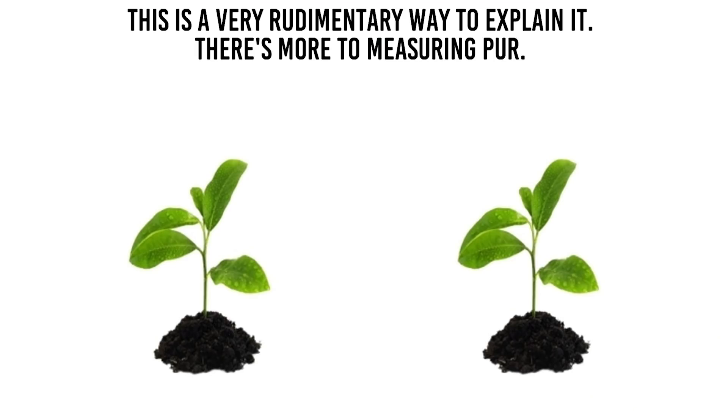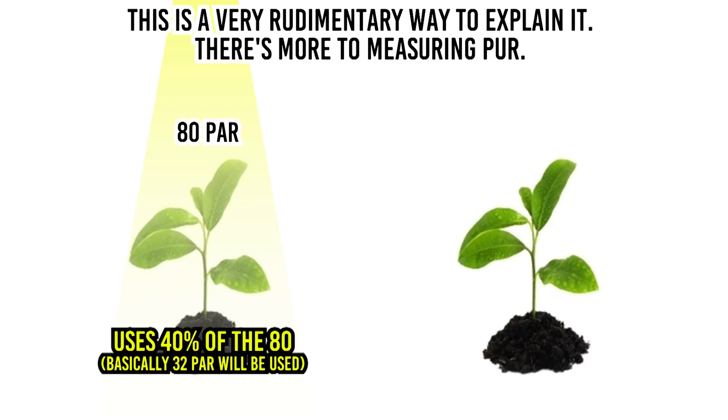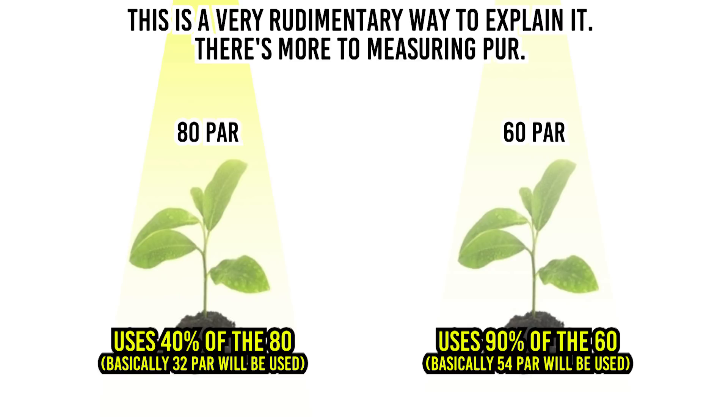Now I know that's still out of the range for some of us, but that's a good example of how the tech is advancing, and as the tech advances, products are going to go lower in price. PAR is the more accurate reading to go by when growing plants. For example, suppose you use a light fixture that gives a PAR rating of 80, but your plants can only use 40% of that — meaning the PUR value is about 40%. Why use that when you could use a light that gives 60 PAR, but your plants can use 90% of that PAR rating? I hope you understand why PUR is a more accurate reading than PAR, but for right now, PAR is still a good way to go.